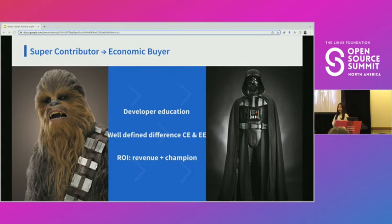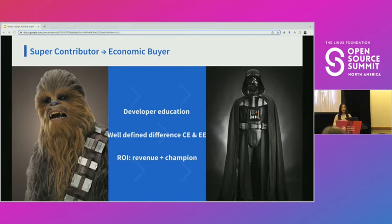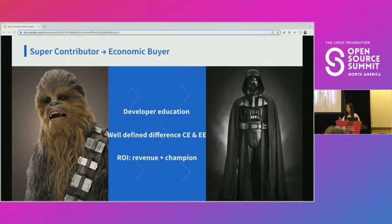The last example: super contributors do convert into economic buyers — it does happen, though sometimes it takes a little longer. Developer education is quite the key here. You need to let your super contributor be well aware of the difference between your community edition and your enterprise version. As a product owner, you need well-defined features that differentiate those products. Then all it takes is time, an opportunity, and a nudge. The ROI is immediate revenue gain for your company, plus an insider champion coming from the community after the sale is made.